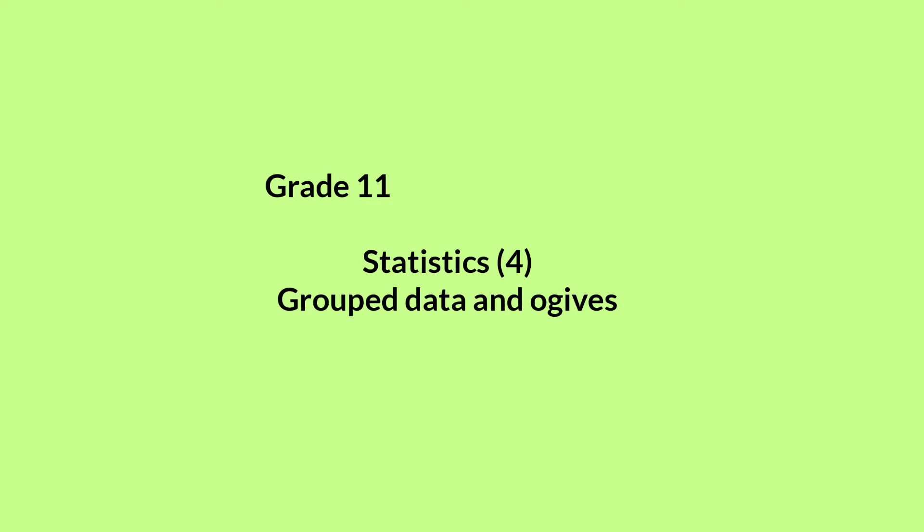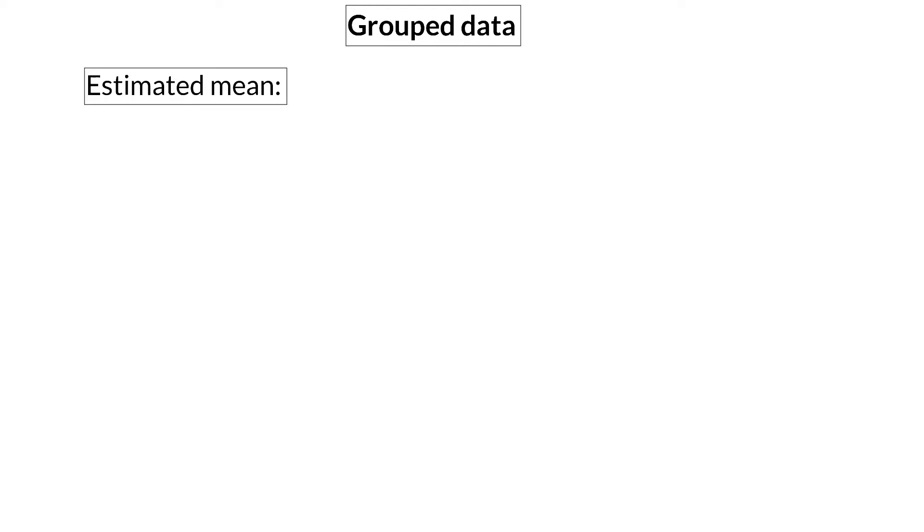In this lesson we're going to have a look at what you already know about grouped data and we're going to have a look at ogives. When a set of data consists of a big number of values it is a good idea to group the data. When you receive only the grouped data you cannot determine the actual mean, median or mode anymore, but today we're going to have a look at calculations to determine the estimated mean, median and mode. We are going to start off with the estimated mean.